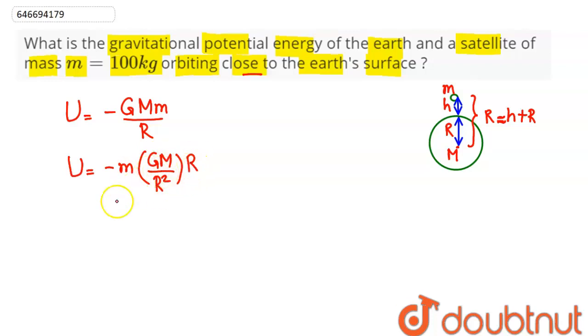This comes out as minus m times GM over R squared times R, where GM over R squared equals g, acceleration due to gravity, and R is radius of the earth. Substituting the values: